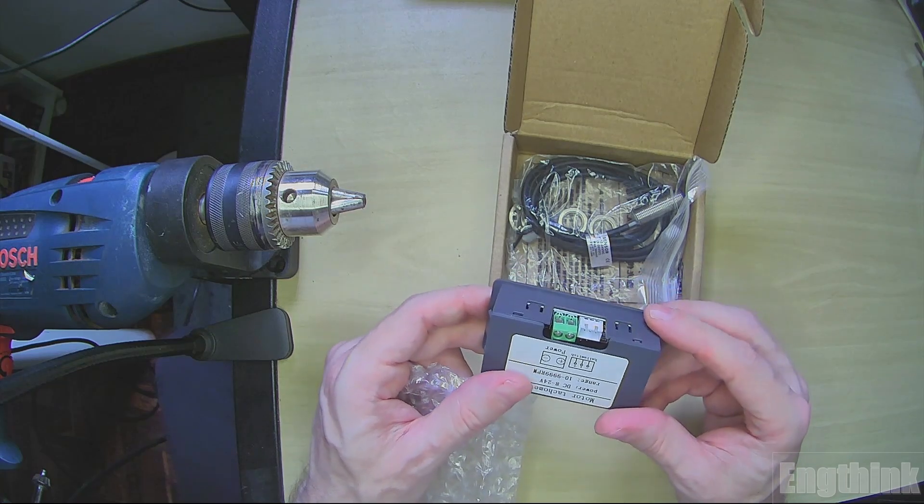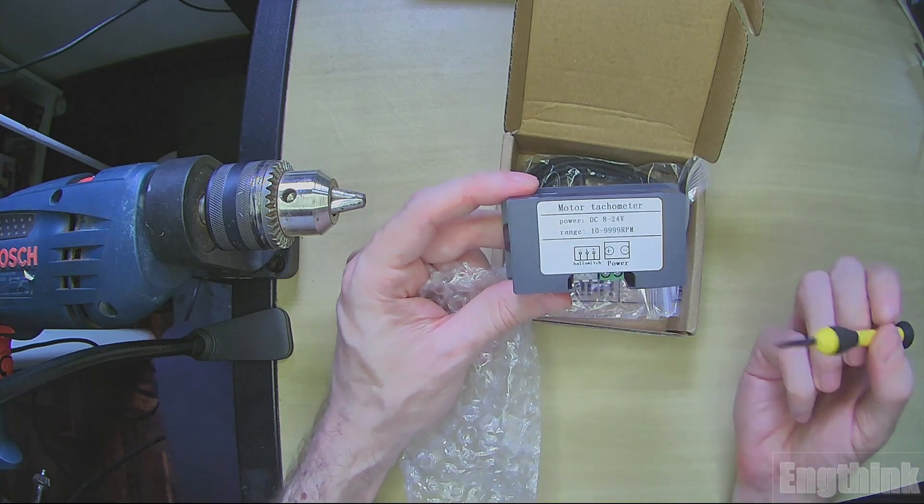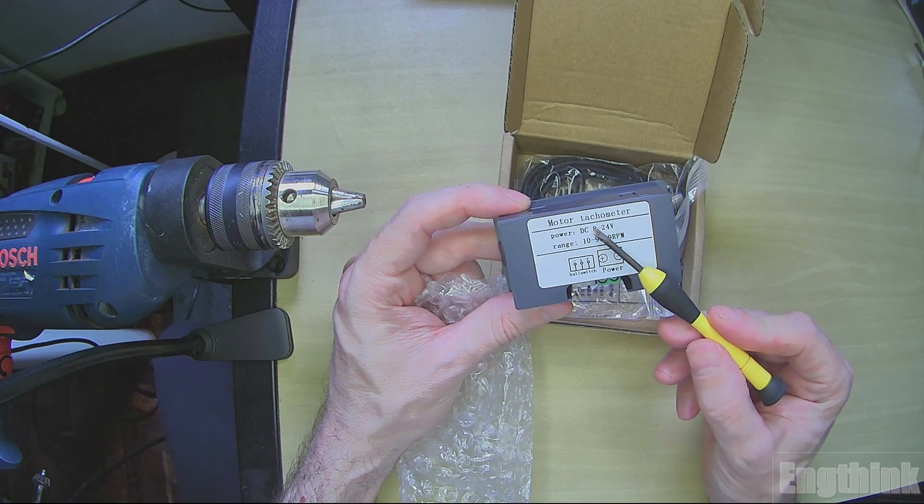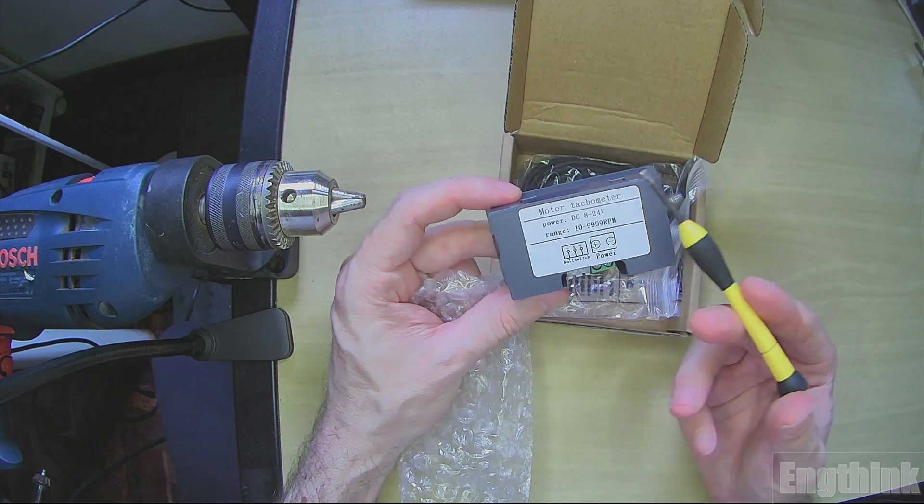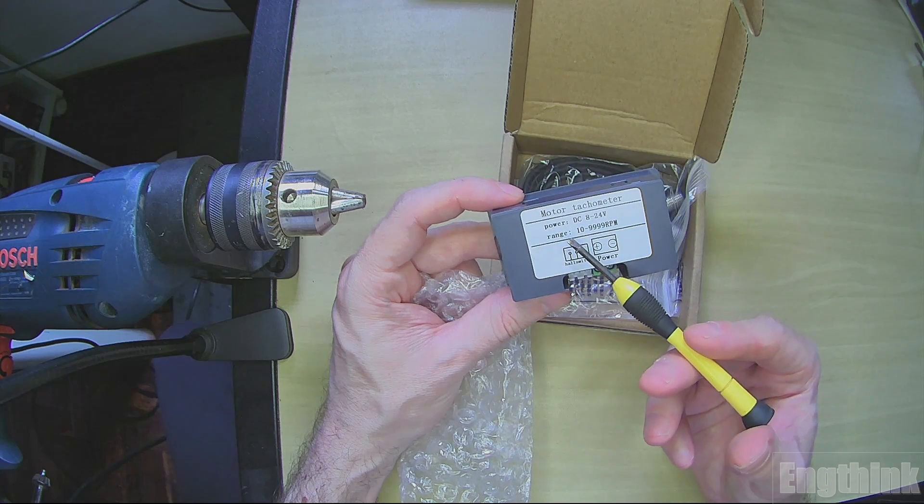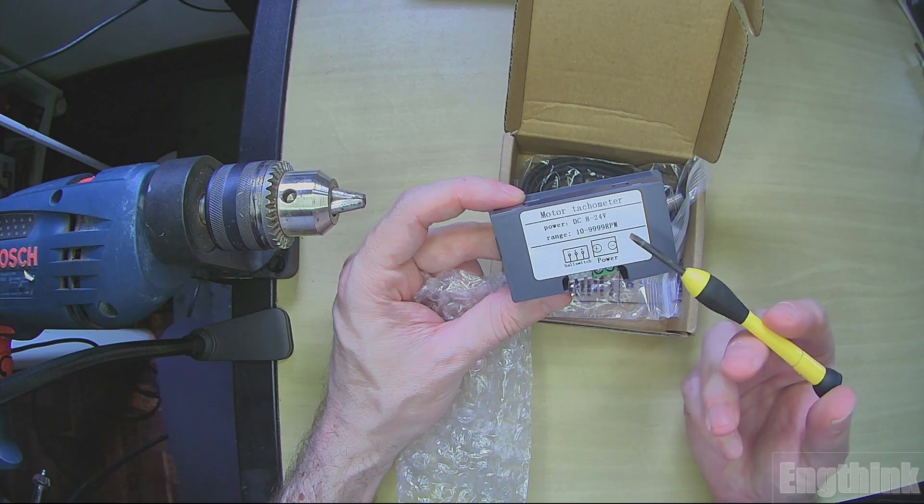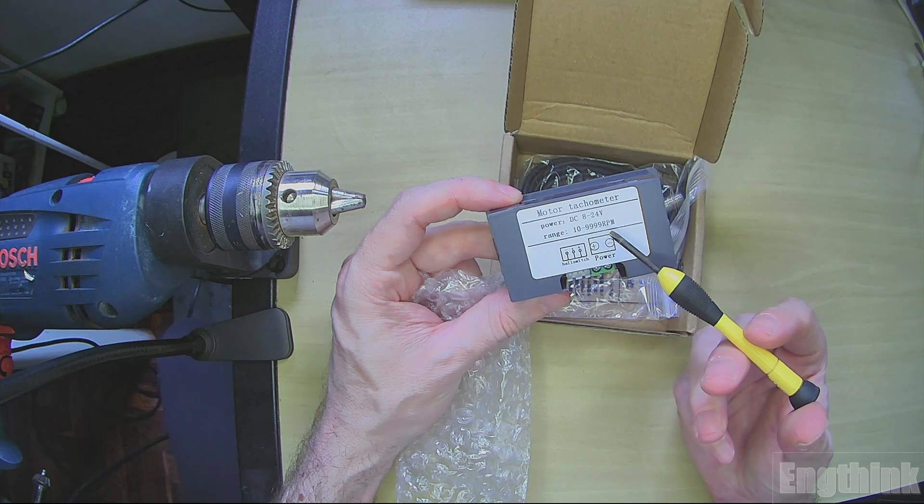We have two connectors basically. One is for the power, DC power that can accept 8 to 24 volts DC. The range of the tachometer is between 10 to 9999 RPM, meaning rotations per minute.